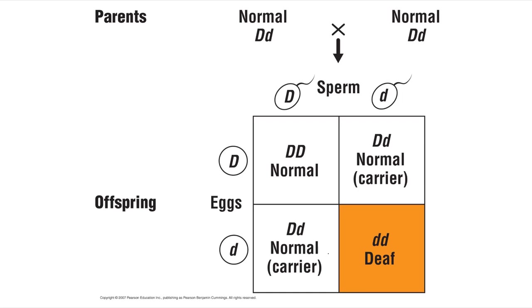Here we're looking at a particular case of genetically caused deafness, and it's caused by a recessive allele. Both of the parents are heterozygous, yet they have normal hearing. When we look at the possible offspring from this cross, it's possible that they will have a child with normal hearing just like the parents. But if that child receives the recessive allele from both parents, they will then be deaf.